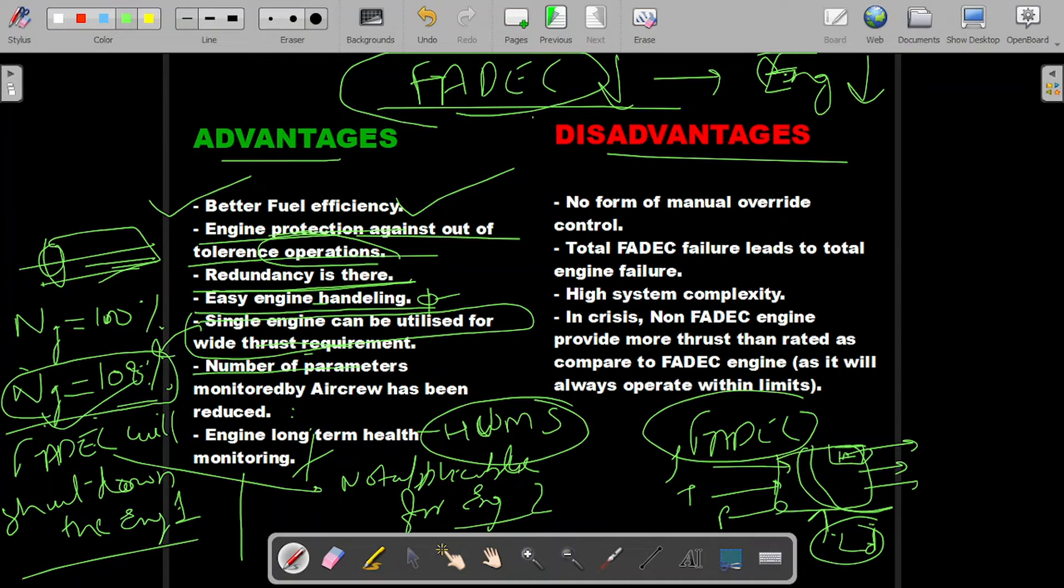With the help of FADEC, HUMS also comes into picture. Now coming to the disadvantage part, which is very important to discuss: there is no form of manual override. If FADEC fails, both engines fail and there is no manual control over it. If it is a helicopter...